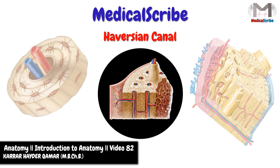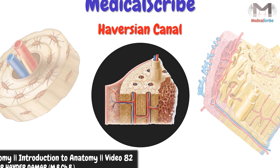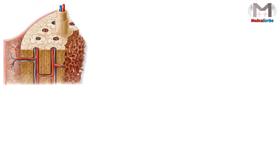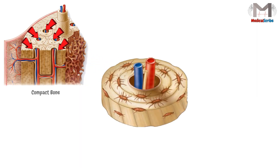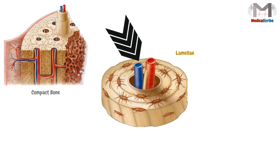Hello everyone, I'm Karar Haidar, and this is your channel MedicalScribe. We said in the compact bone video, if you remember, that this type of bone is made up of several osteons parallel to each other, and each osteon will consist of lamellae along the length of the bone. And the last thing it has is a vascular canal in the center of this osteon called the Haversian Canal, and today our talking will be about it.